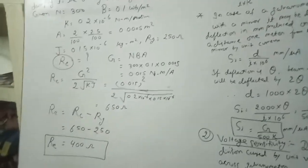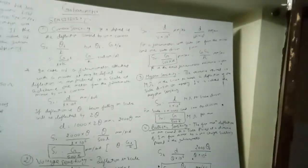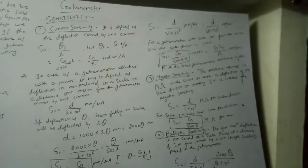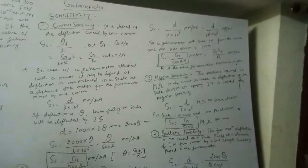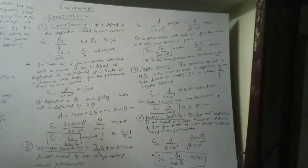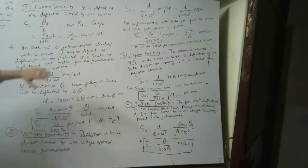Similar simple numerical questions can be asked in university exams. Now, coming to the next topic: galvanometer constants, also known as the sensitivity of the galvanometer. We have already studied different types of constants: G, K, theta, and damping constant dm. Sensitivity is defined in terms of current sensitivity, voltage sensitivity, mega ohm sensitivity, and ballistic sensitivity — four types in total.